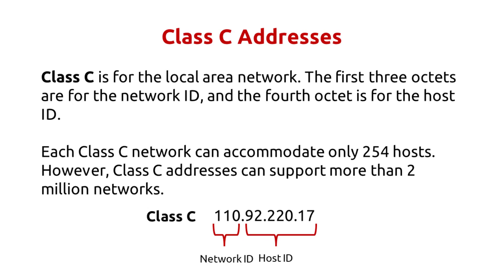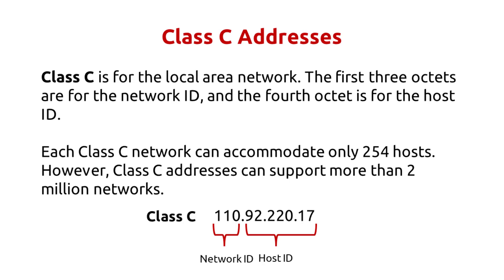Class C is for the local area network. The first three octets are for the network ID and the fourth octet is for the host ID. Each Class C network can accommodate only 254 hosts. However, Class C addresses can support more than 2 million networks.